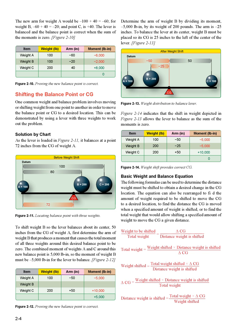The combined moment of weights A and C around the new balance point is +5,000 pound-inches, so the moment of weight B must be −5,000 pound-inches for the lever to balance. In figure 2-12, determine the arm of weight B by dividing its moment (−5,000 pound-inches) by its weight of 200 pounds: the arm is −25 inches. To balance the lever at its center, weight B must be placed so its CG is 25 inches to the left of the center. Figure 2-14 confirms the sum of moments is zero.